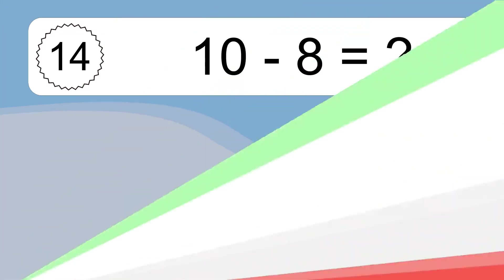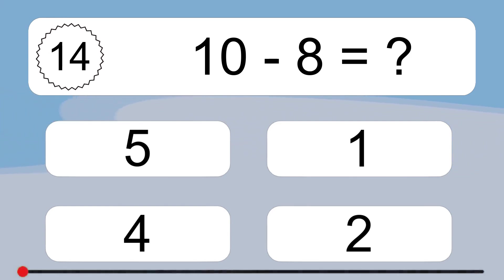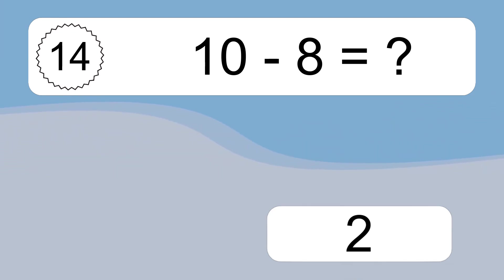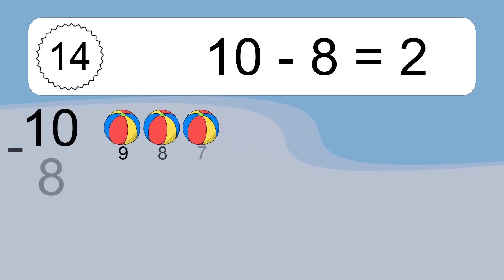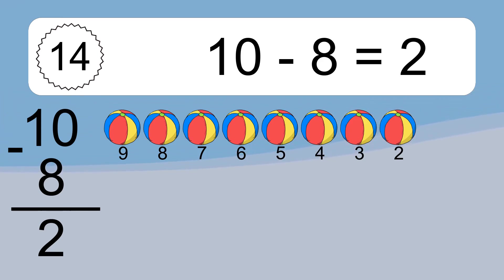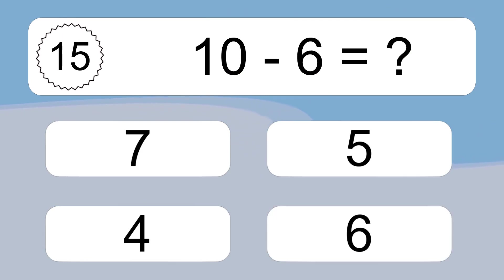10 minus 8 equals what? 10 minus 8 equals 2. Let's count it: 9, 8, 7, 6, 5, 4, 3, 2.